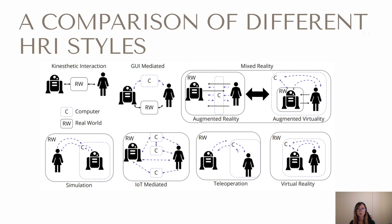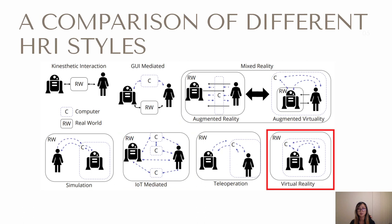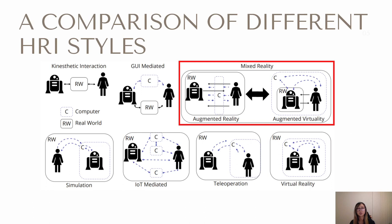Here's the diagram we built which provides an overview of the current human-robot interaction styles. We have kinesthetic interaction, graphical user interface mediated interaction, simulation, internet of things mediated interaction, and teleoperation. Now in the realm of virtuality, we have virtual reality or VR. The user resides in a virtual environment and interacts with the robot, which may reside in the real world or virtual environment. Similar to VR, but with an incorporation of real world content, we have mixed reality.